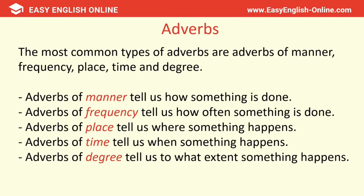Adverbs of manner tell us how something is done — for example, quietly or noisily. Adverbs of frequency tell us how often something is done — for example, always or never. Adverbs of place tell us where something happens — for example, inside the house, above the shelf. Adverbs of time tell us when something happens — for example, today, tomorrow, soon. And adverbs of degree tell us to what extent something happens — for example, really cold, so excited, very cruel.